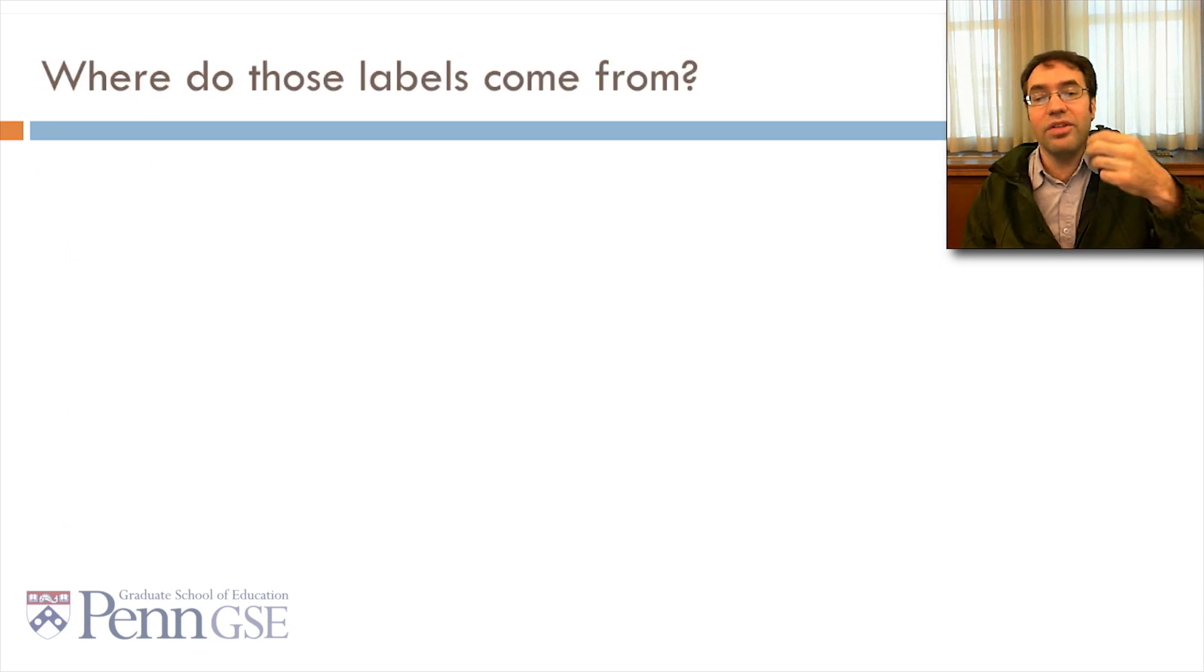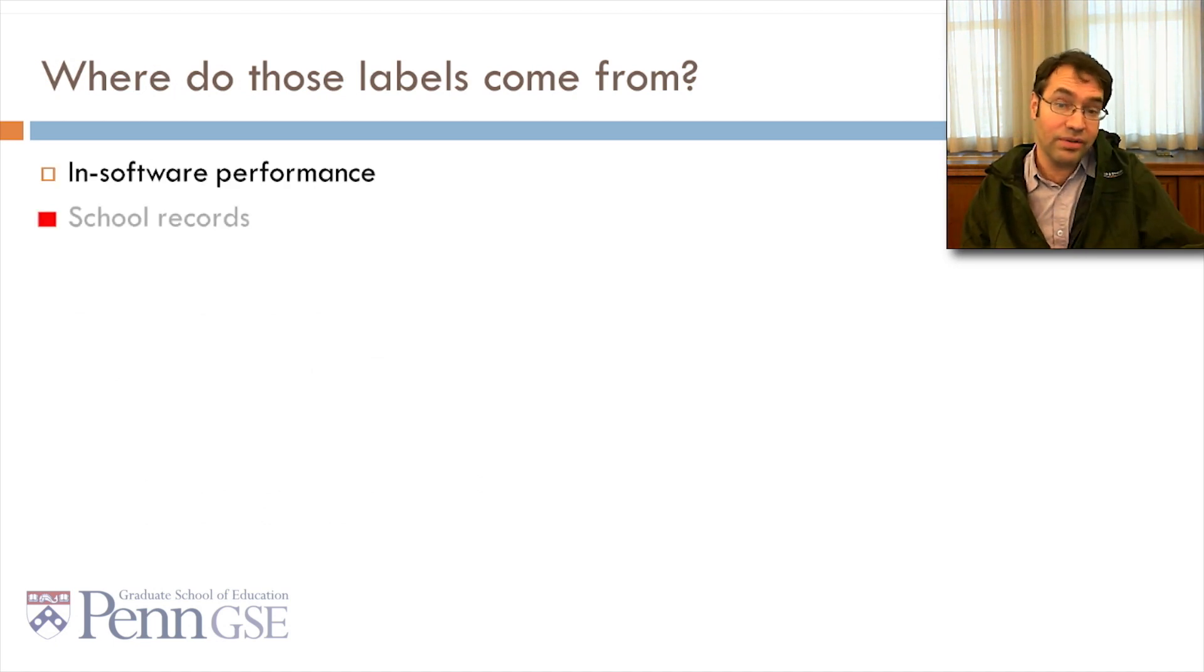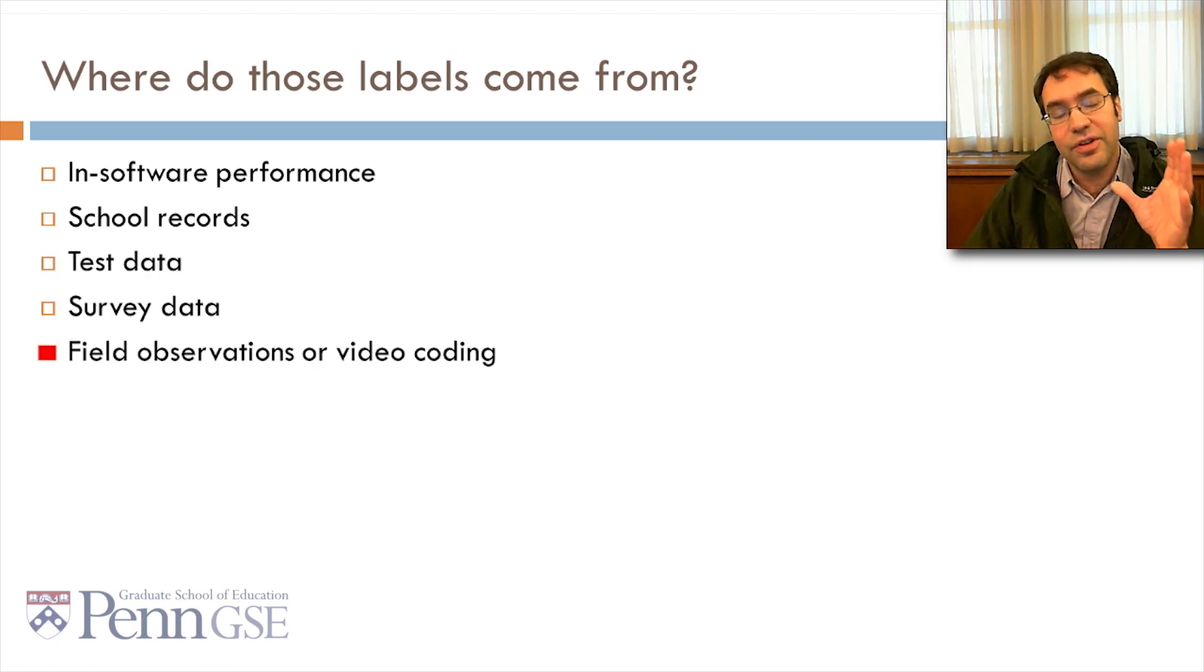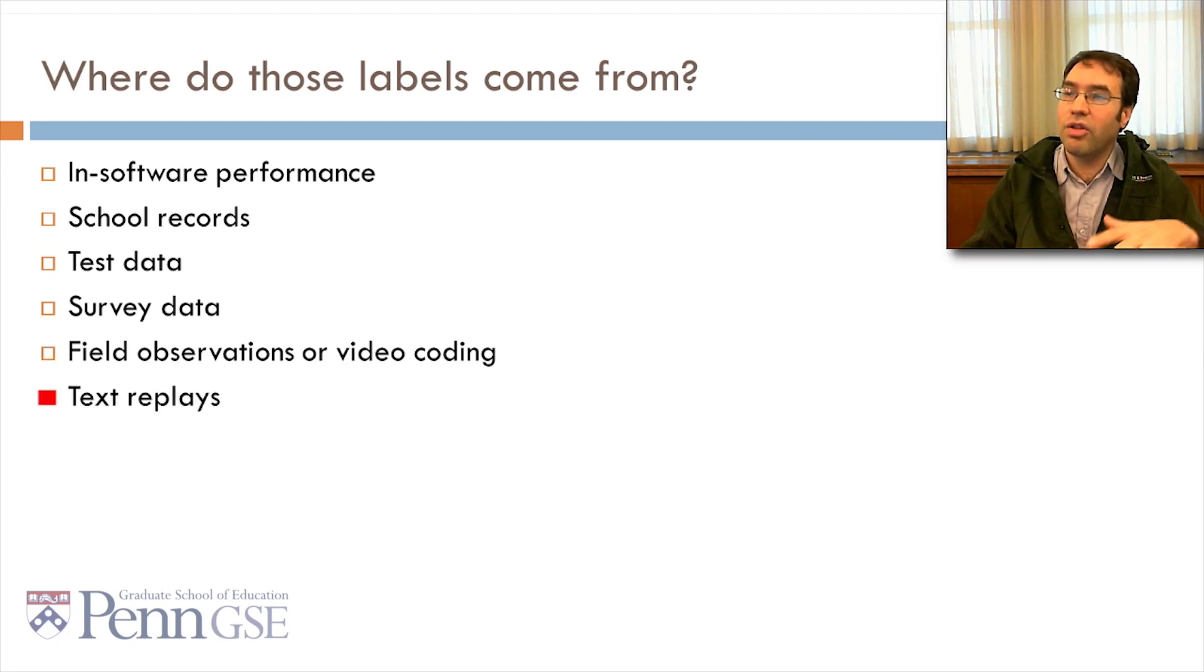You may ask, where do these labels come from? They can come from a lot of places: student in software performance, was the student correct or wrong? School records, test data, survey data, field observations or video coding data, text replays—pretty prints of log files of student interaction with software. Jadith Rodrigo's EDM workbench is a good tool if you want to learn more about that.